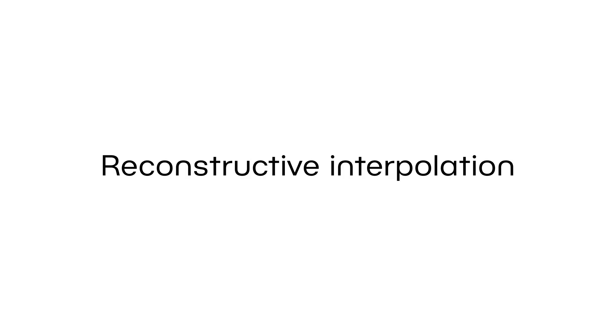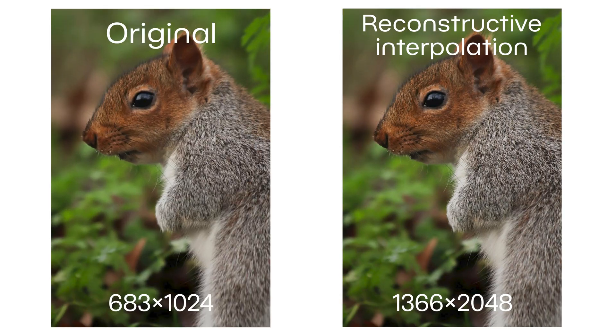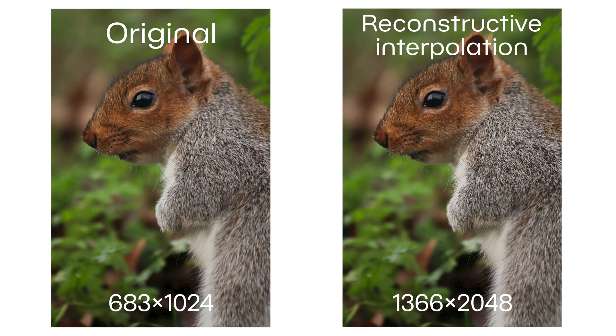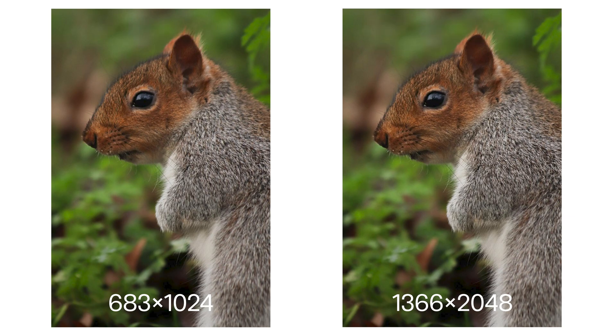The first method is AI Resize using reconstructive interpolation. It enlarges the photo without inventing new details, giving you a natural looking result with no distortion. This method is very fast and works great for batches of photos, but don't overdo it.